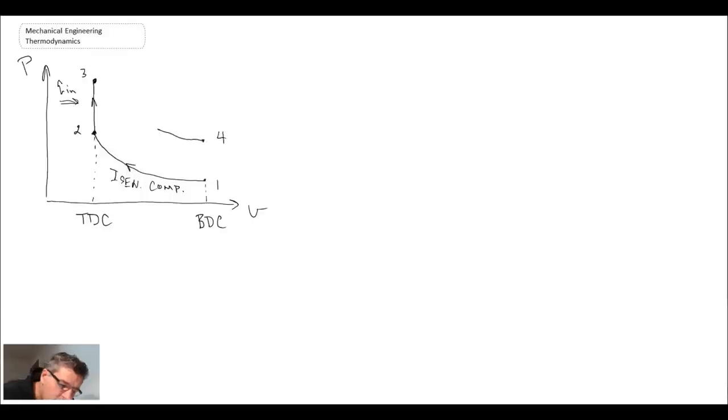And that will be another isentropic expansion process. And that is the power stroke. And then we have here our exhaust, and we will model that as a heat rejection process. So looking at the steps of the Otto cycle: one to two is isentropic compression, two to three is the heat addition process, and that is constant volume combustion.